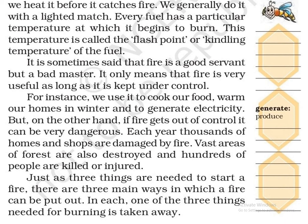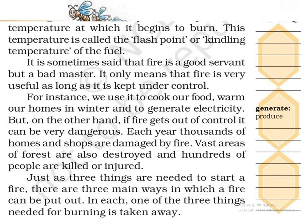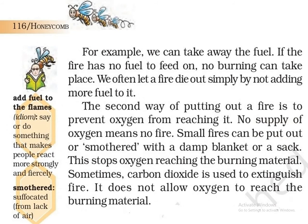Just as three things are needed to start a fire, there are three main ways in which a fire can be put out. जिस प्रकार आग जलाने के लिए तीन चीजों की आवश्यकता होती है, उसी प्रकार आग बुझाने के लिए भी तीन मुख्य तरीके हैं. In each, one of the three things needed for burning is taken away. जिन तीन चीजों की आवश्यकता आग जलाने के लिए होती है, आग बुझाने के लिए उनमें से एक को हटा दिया जाता है. For example, we can take away the fuel. उदाहरण के लिए हम ईंधन को हटा सकते हैं. If the fire has no fuel to feed on, no burning can take place. यदि आग को ईंधन नहीं मिलेगा, तो आग जल ही नहीं सकती.